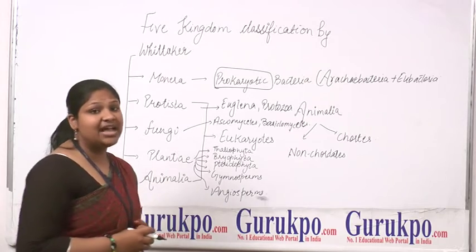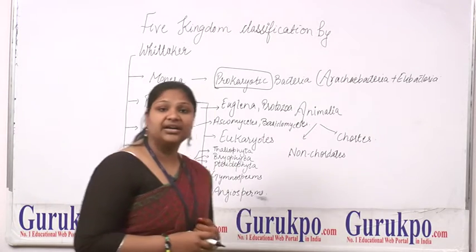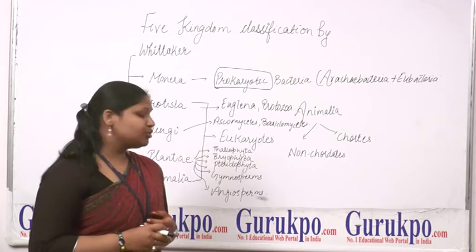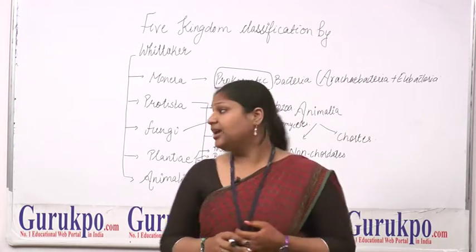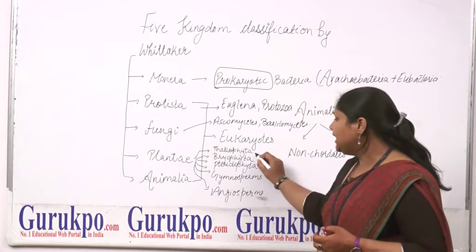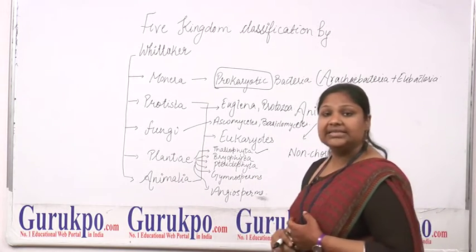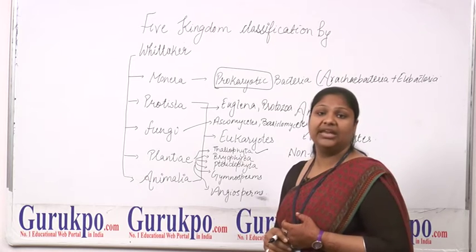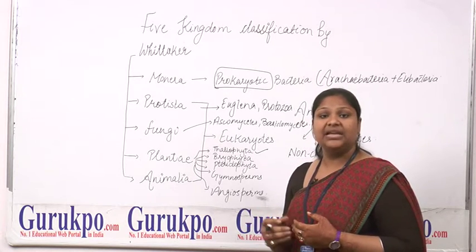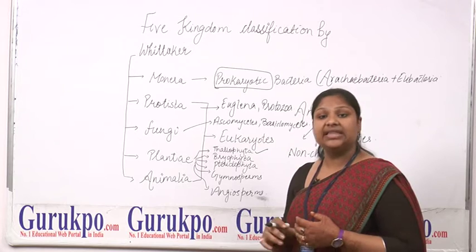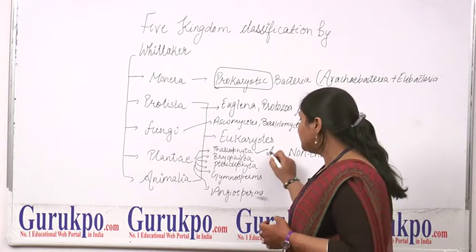Next kingdom is Plantae, which includes various classes: Thallophyta, Bryophyta, Pteridophyta, Gymnosperms, and Angiosperms. Thallophyta, as the name indicates, have a thallus-like structure. This thallus-like structure does not have any proper organization of stem, leaves, or flower — only a thallus-like structure is present. An example is algae.